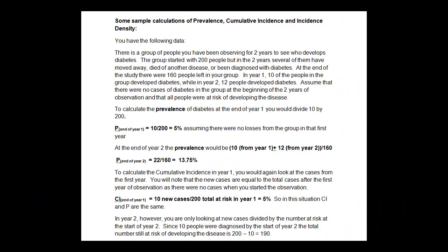Let's go back to the week three step-by-step guide to see how these calculations work. In this example, we have a two-year study of 200 people to see who develops diabetes. At the end of the two years, there are only 160 people left. In year one, 10 people develop diabetes; in year two, 12 people develop diabetes. To calculate prevalence: at the end of year one, 10 people out of 200 gives us a prevalence rate of 5%. At the end of year two, 10 plus 12 people out of 160 remaining gives a prevalence rate of 13.75%.